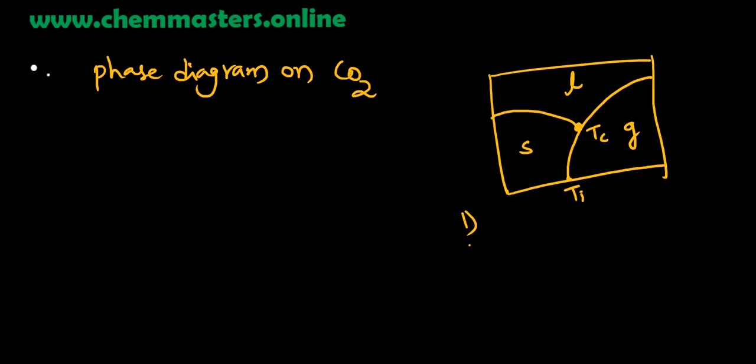The correct statements are: above the critical temperature, liquid phase cannot exist. And the second correct statement is that at the triple point temperature, all three phases - solid, liquid, and gas - can exist.